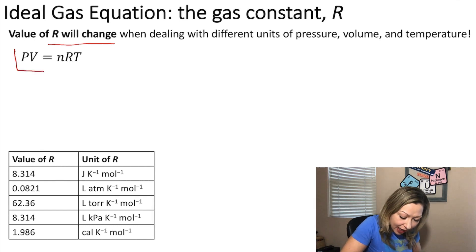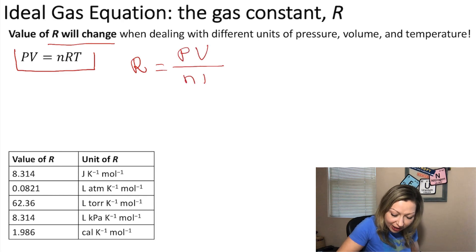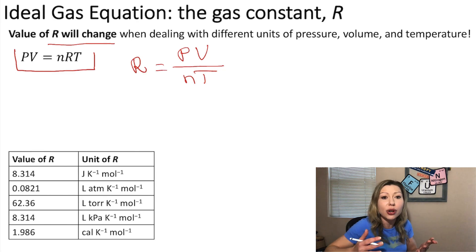If we look at the ideal gas equation, we can solve from there for R, the ideal gas constant. So that will equal PV over nT. From this expression it's obvious that if you are using different units of pressure, volume, or temperature, the unit of R and also the value of R should change.